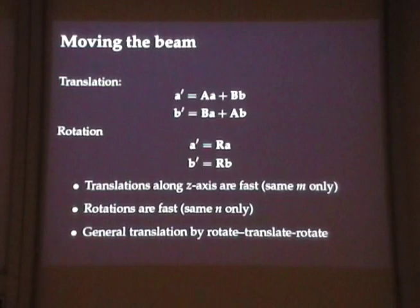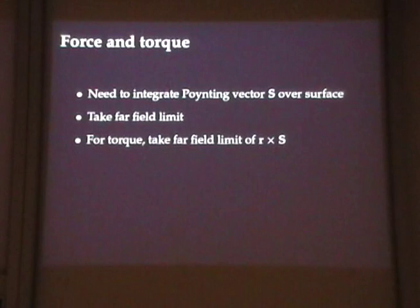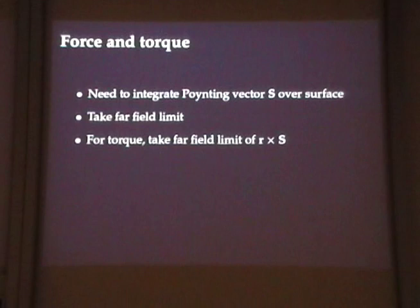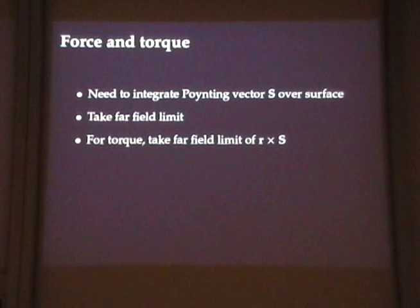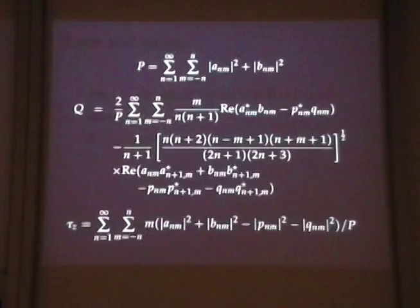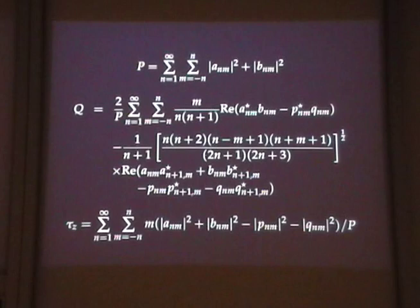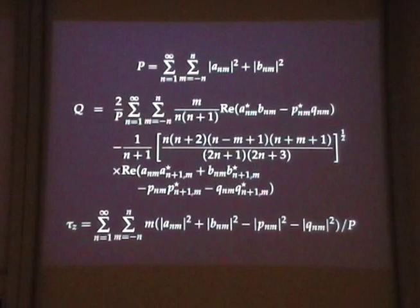To calculate the force and torque, we want to compute and integrate the Poynting vector. Taking the far-field limit and writing fields in terms of vector spherical wave functions, we can do this analytically. Most products of wave functions disappear, and we're left with relatively simple formulas for the absorbed power, force, and torque. It's much easier than numerically calculating the field over a whole grid. Essentially we have an analytical formula that converts our field coefficients into the force and torque. The torque about the z-axis is particularly simple.